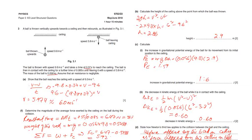9702 Paper 2 Variant 3 May June 2018. Question number 3. A ball is thrown vertically upward towards the ceiling and then rebounds.